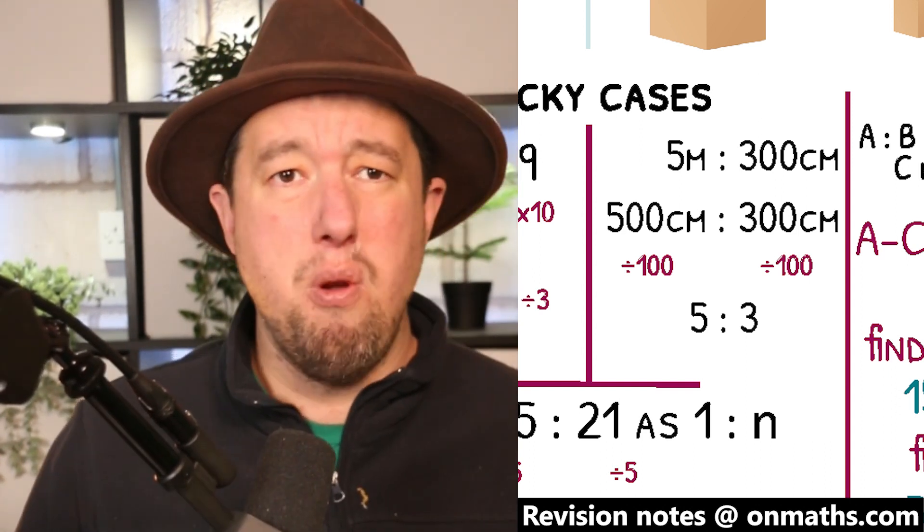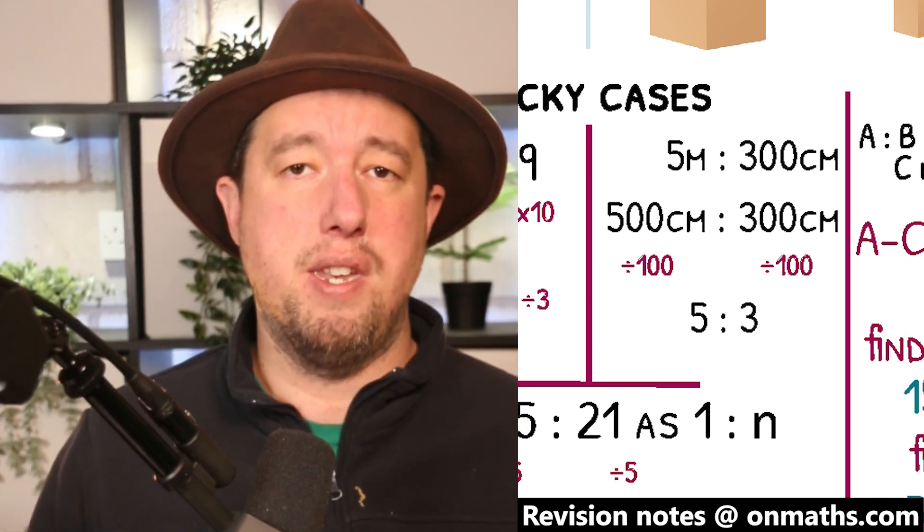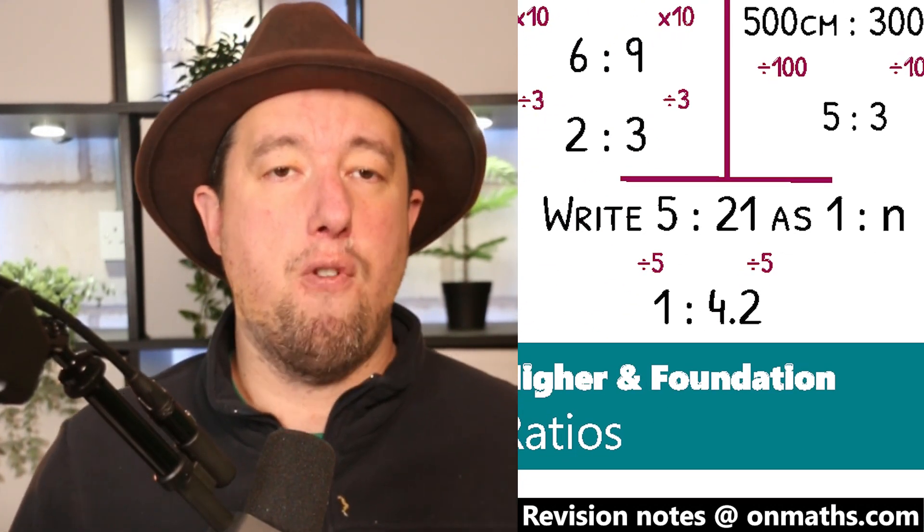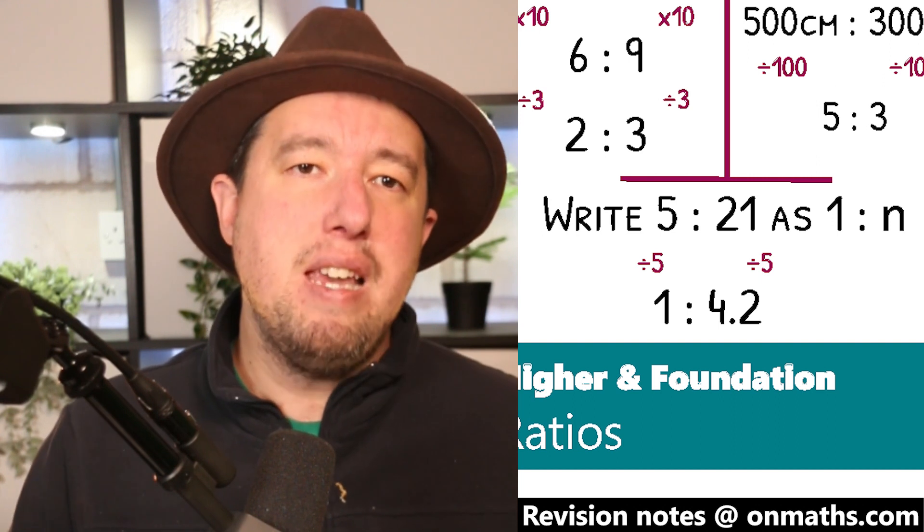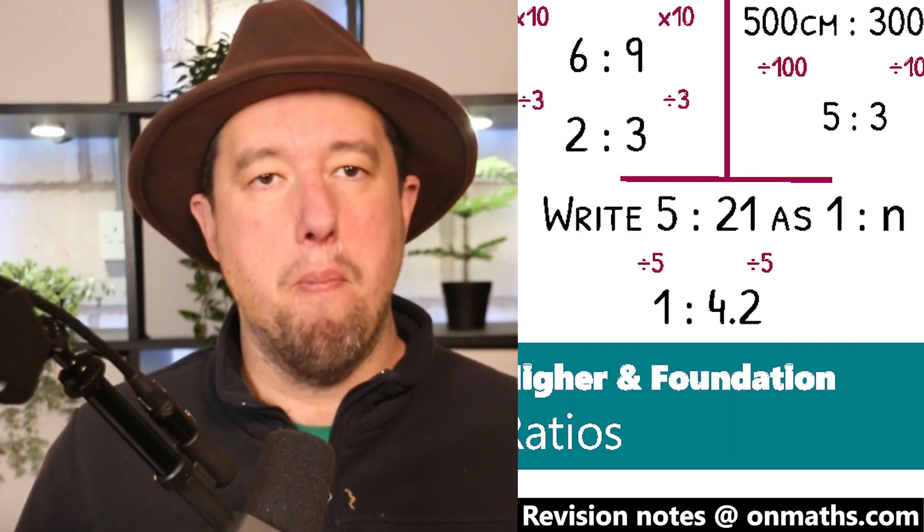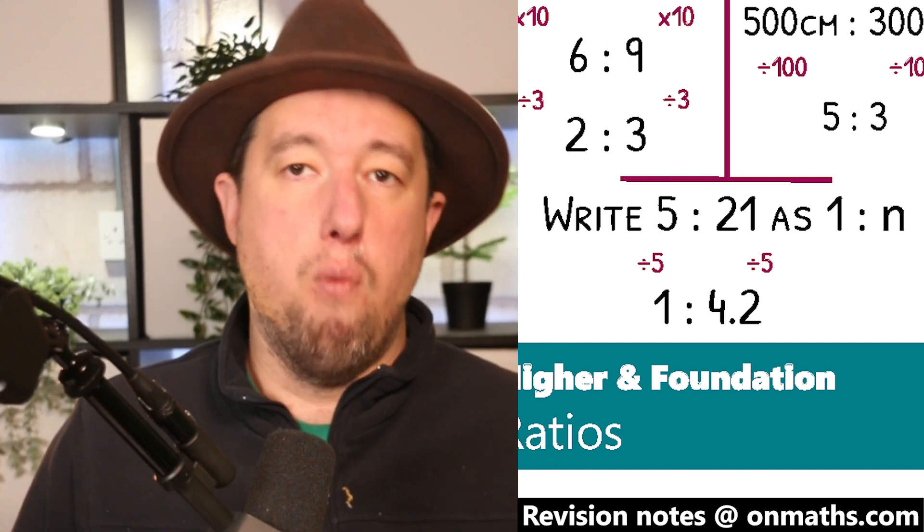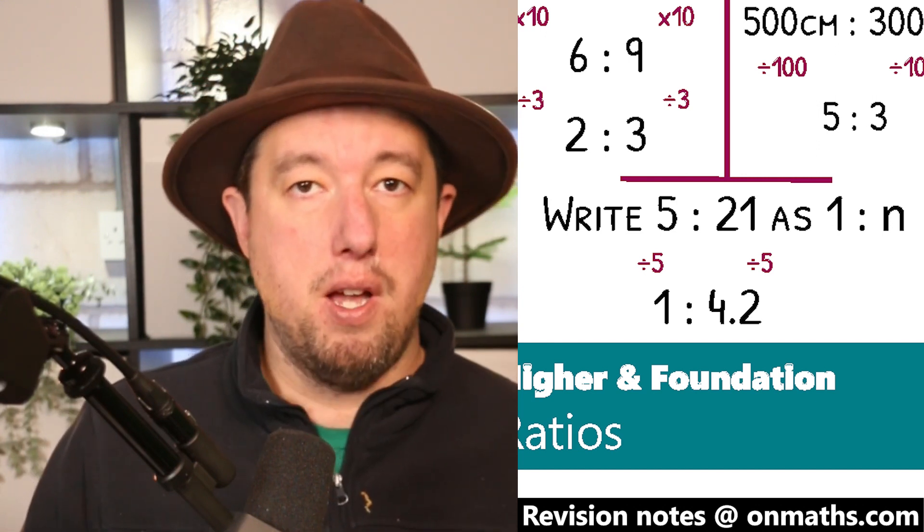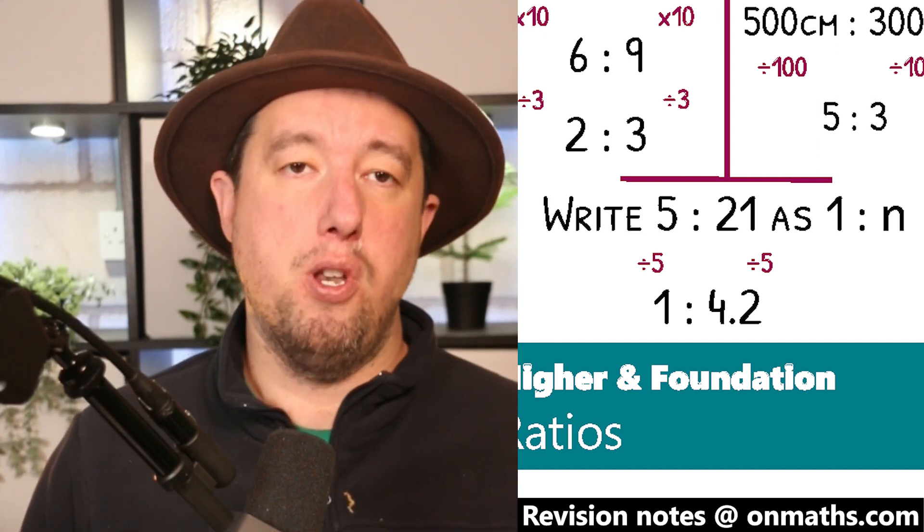Ratios work for all units, so we don't need to show the units anymore. Sometimes you'll be asked for a unit ratio, meaning you will need to make one of the sides one part. To convert 5 to 21 as a ratio of 1 to N, divide both sides by 5 to give 1 to 4.2.